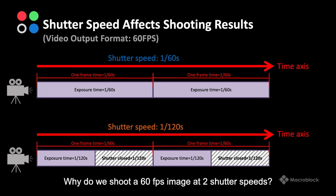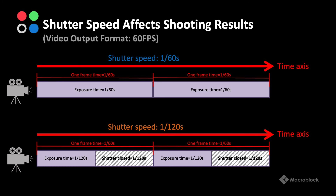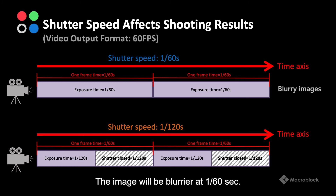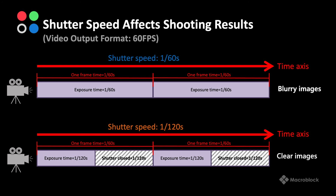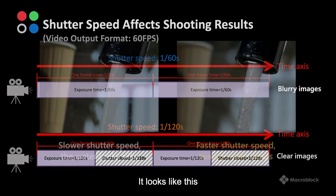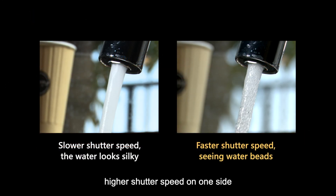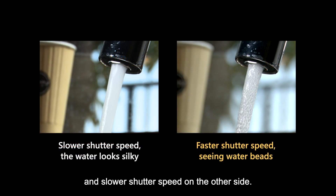Why do we shoot a 60fps image at two shutter speeds? It's for the effects. The image will be blurrier at 1/60th second and clearer at 1/120th second. The faster the shutter speed, the clearer the image — higher shutter speed on one side and slower shutter speed on the other side.